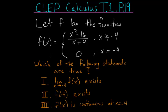Let f be the function f(x) equal to this piecewise function. For when x is not equal to negative 4, f(x) is equal to x squared minus 16 divided by x plus 4. And when x does equal negative 4, the function is equal to 0. Which of the following statements are true?